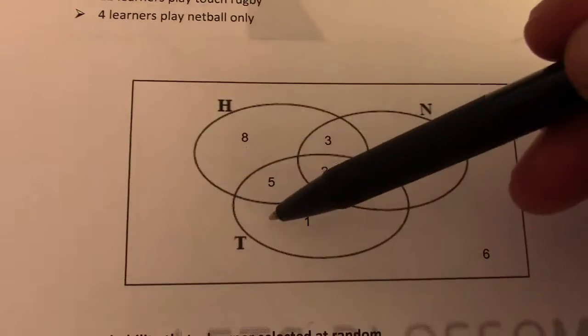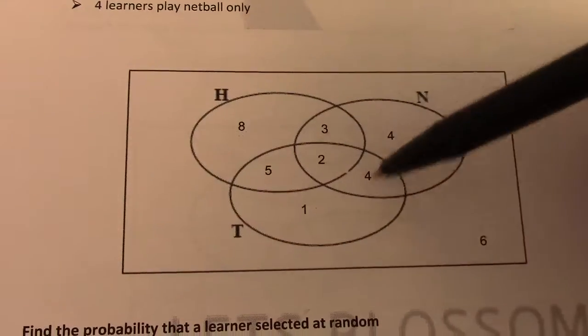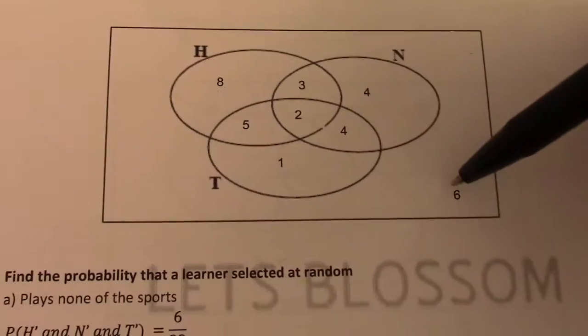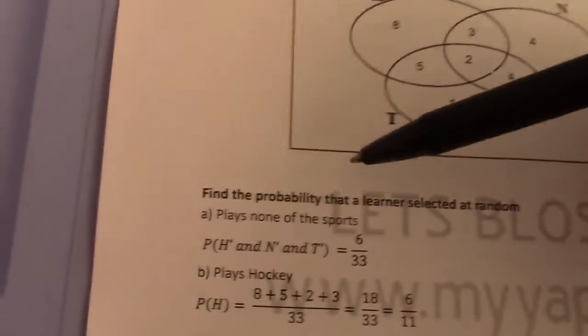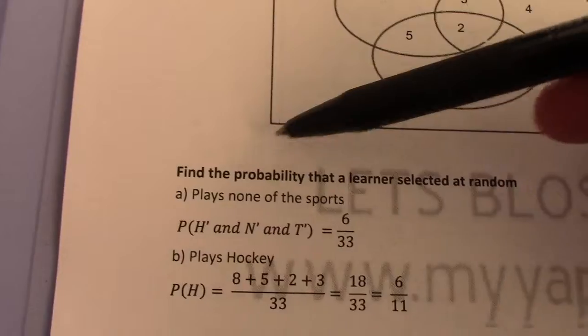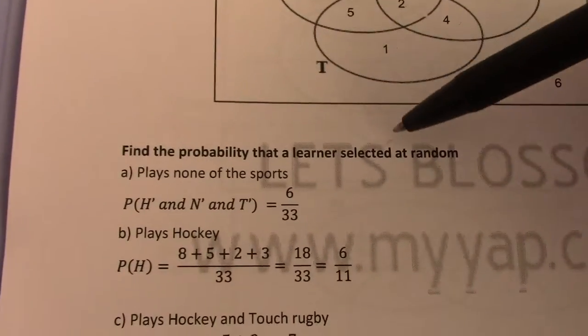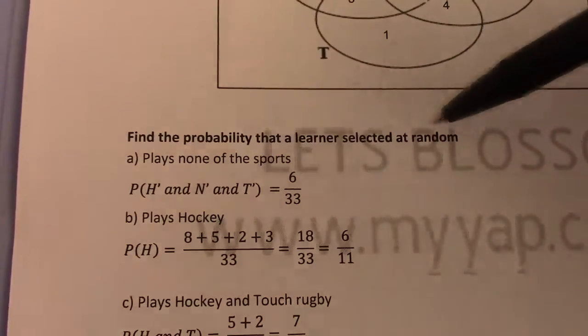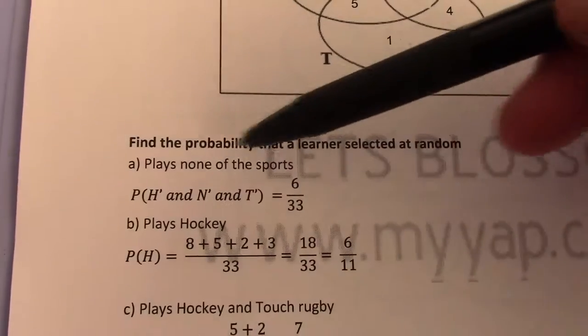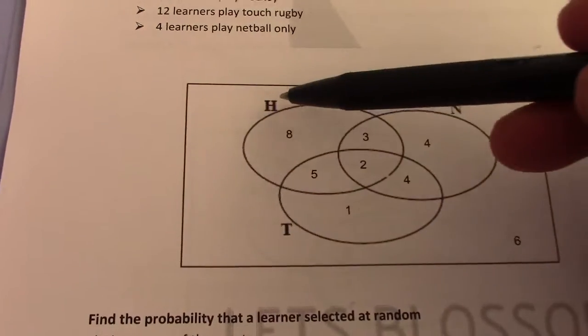So the sports are hockey, netball, and touch rugby. We need to find the probability that a learner selected at random plays none of the sports.